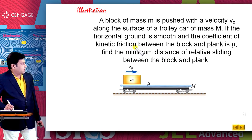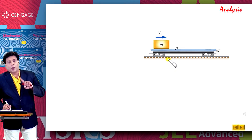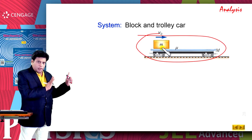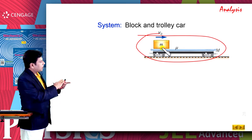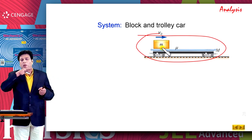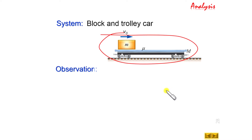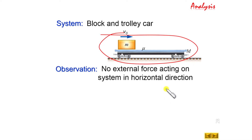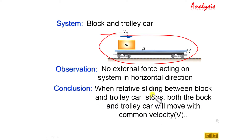When these velocities are equal, relative sliding will stop, and we need to find this relative sliding distance. Let us make the diagram again. The system here is the block and trolley car. We observe that there is friction between the block and trolley, but no friction between the ground and trolley, and no external force acting on the system in the horizontal direction. Therefore, we can say no external force acts on the system in the horizontal direction. Relative sliding stops when the block and trolley move with common velocity.